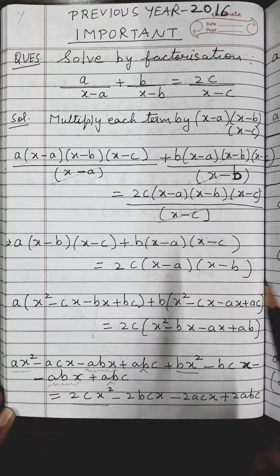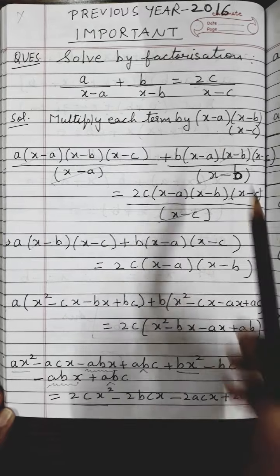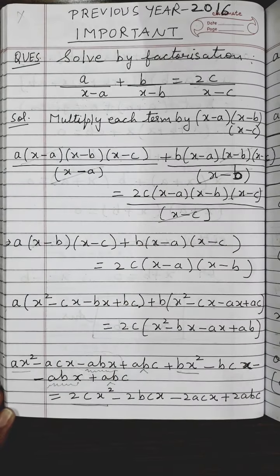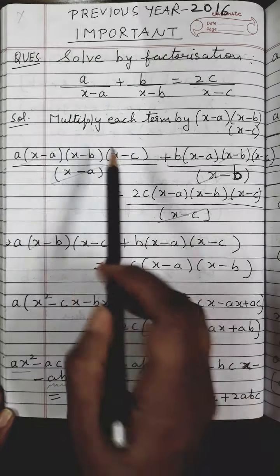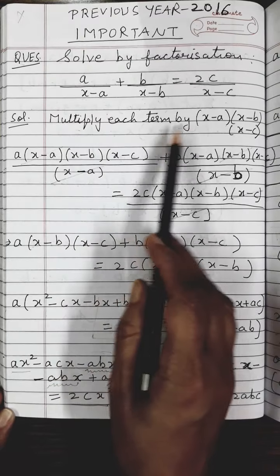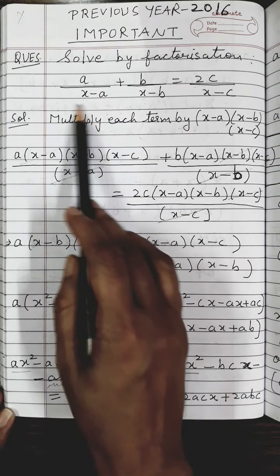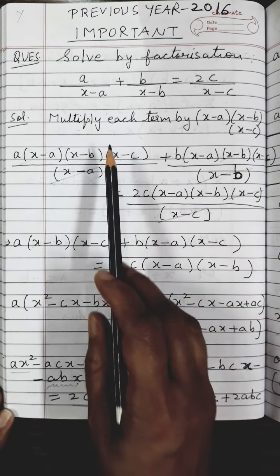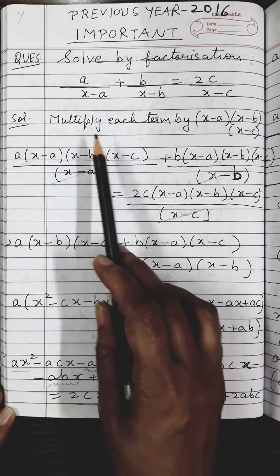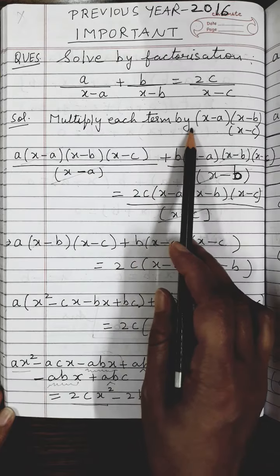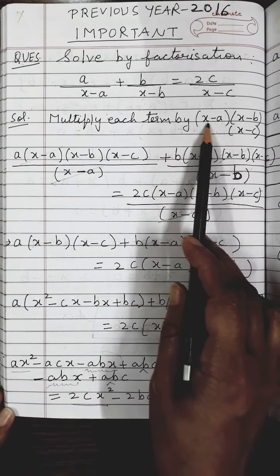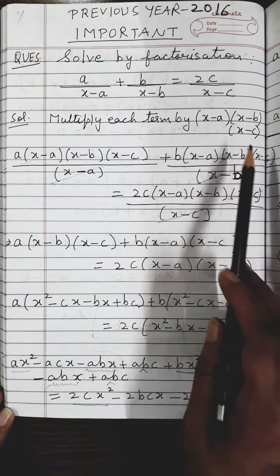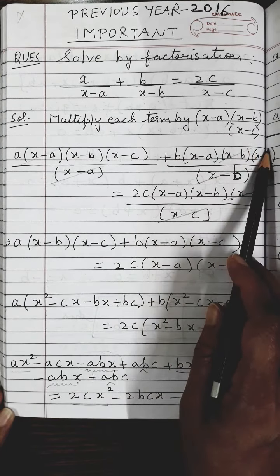So the first step will be to remove these denominators. For that, I will multiply each term by the product of all three denominators — that is, x minus a, into x minus b, into x minus c.